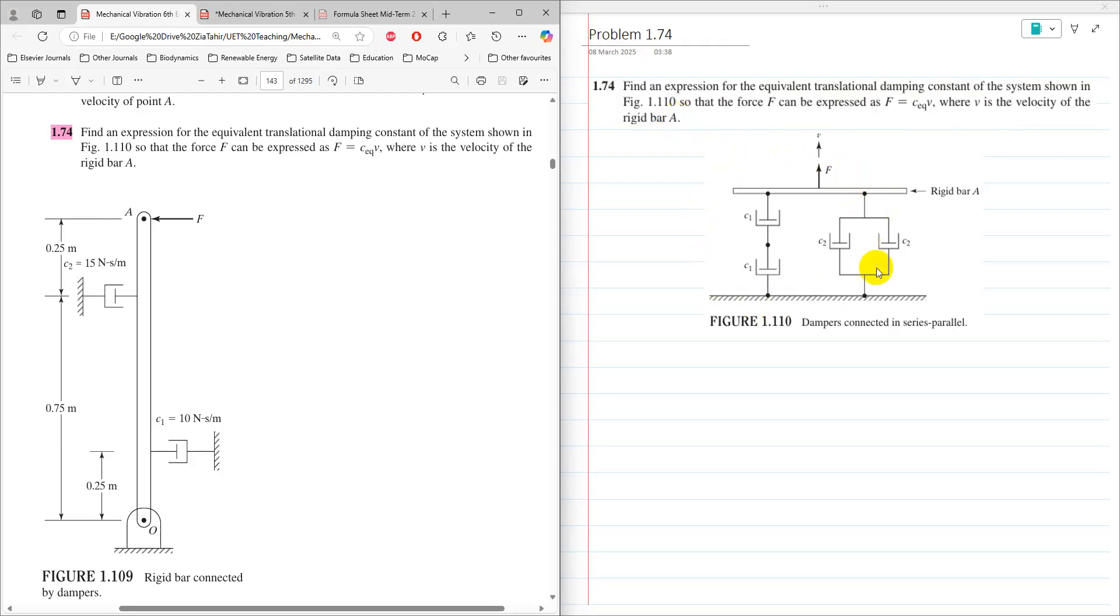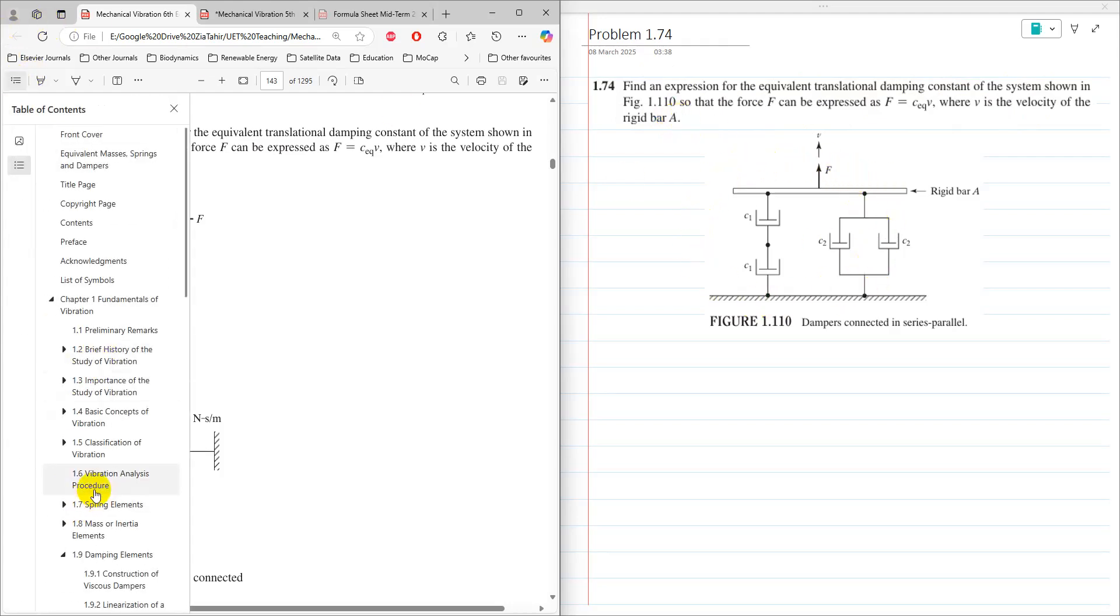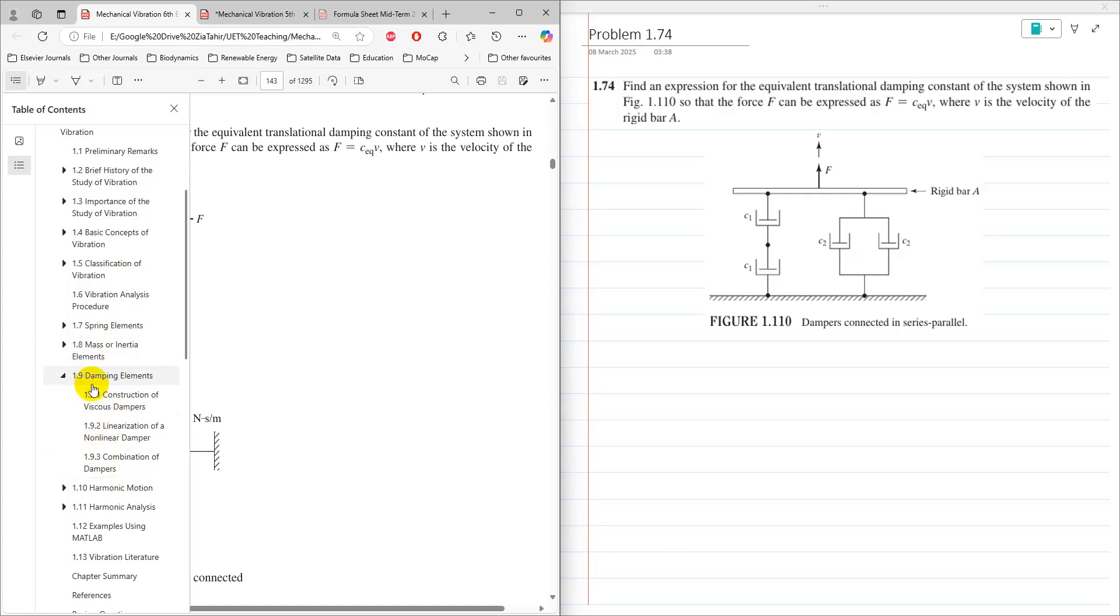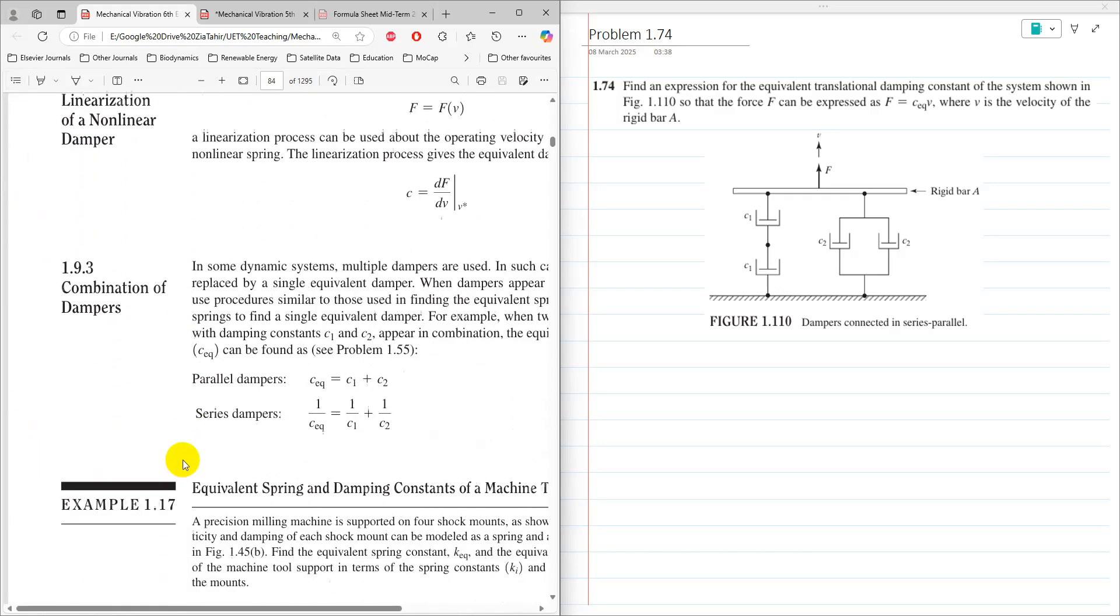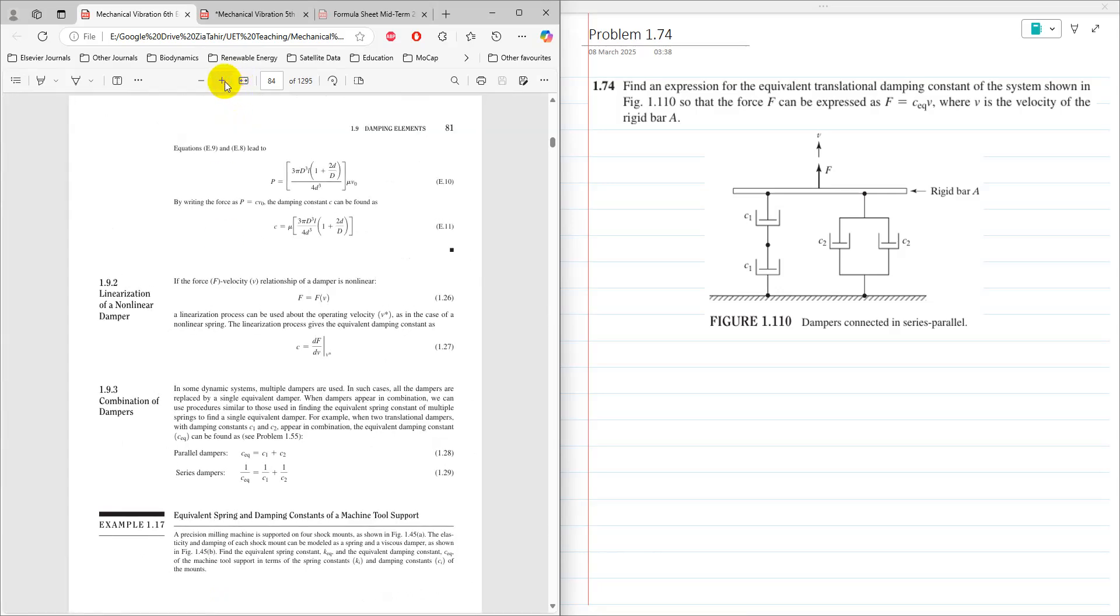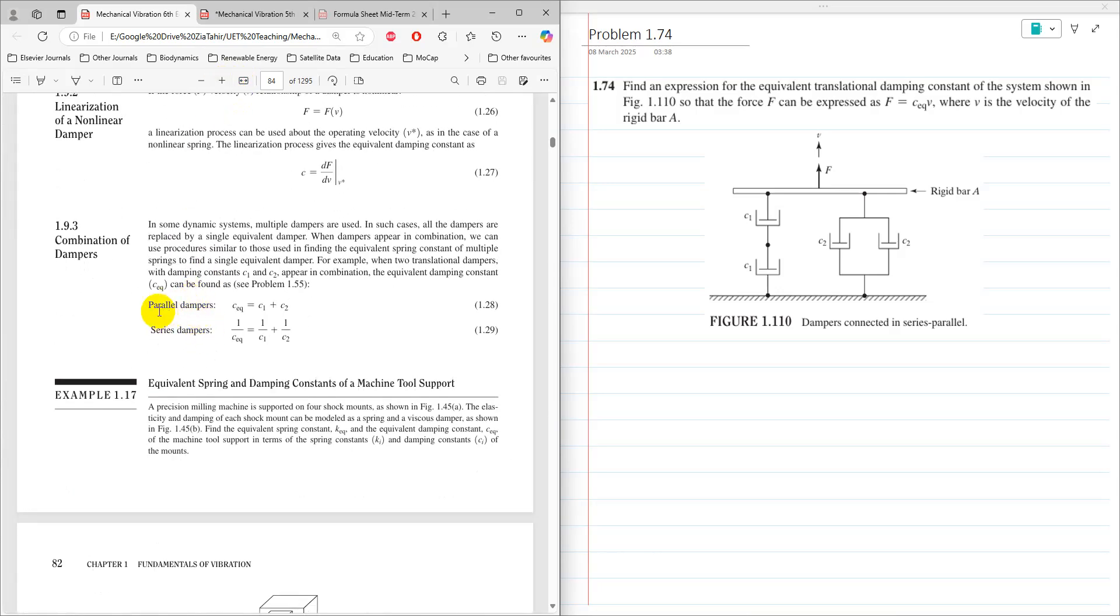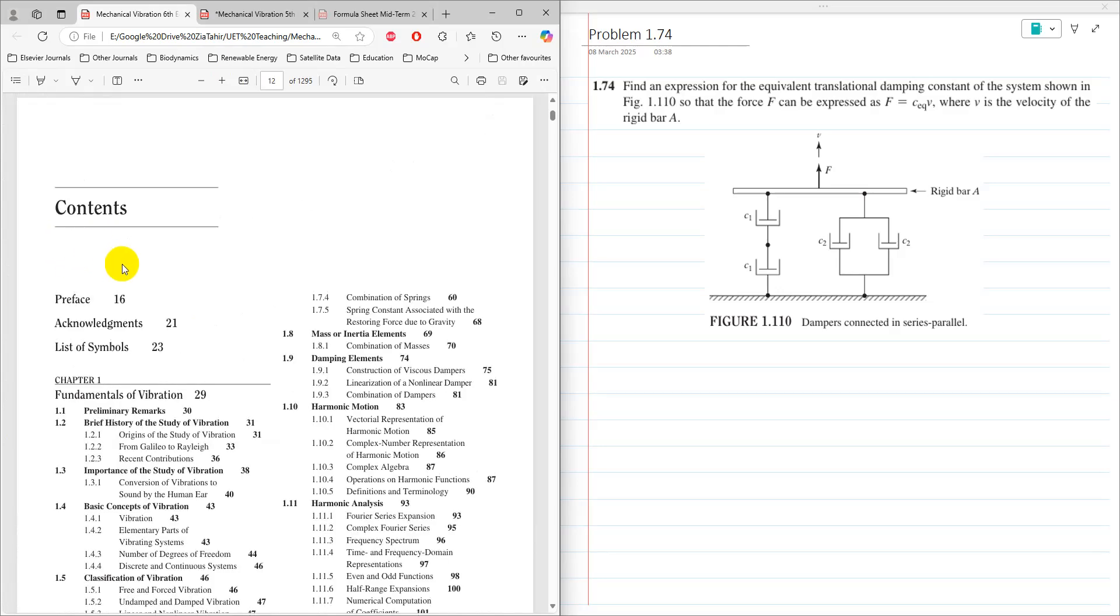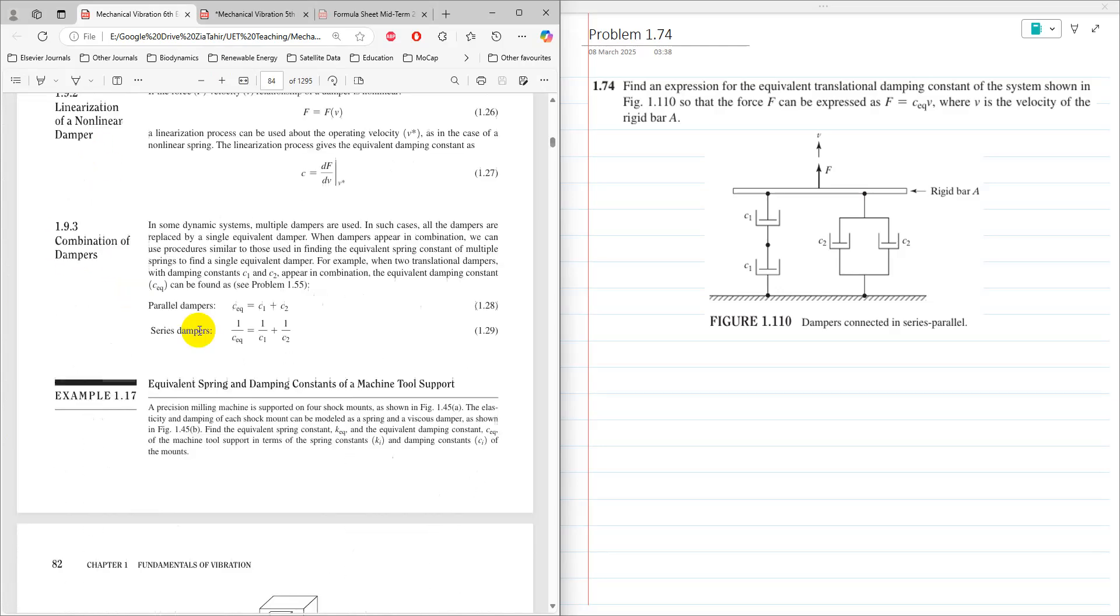The most relevant topic to solve this problem is section 1.9 on damping elements, specifically the combination of dampers. For dampers connected in parallel, the equivalent damping constant is the simple addition of the individual damping constants.